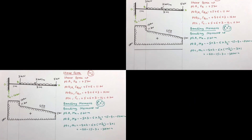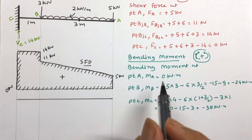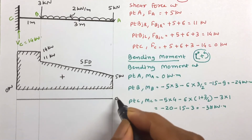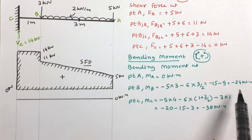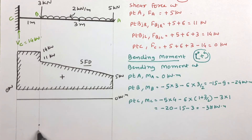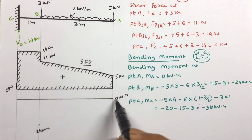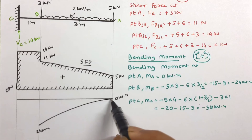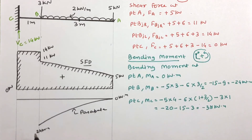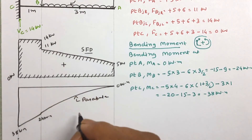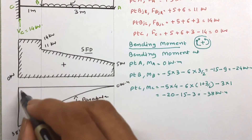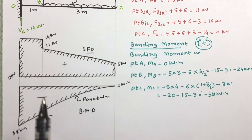Now let us draw the bending moment diagram. At point A the moment is 0 kN·m. At point B the moment is 24 kN·m — since there is UDL in this region, the curve from A to B is parabolic. At point C the moment is 38 kN·m. Joining these gives the bending moment diagram. The diagram is on the negative side because all values are negative.